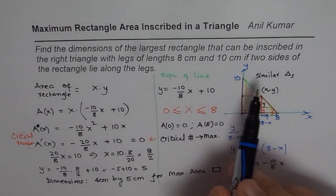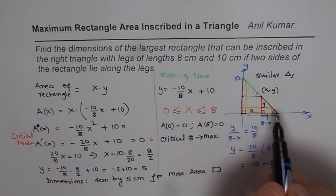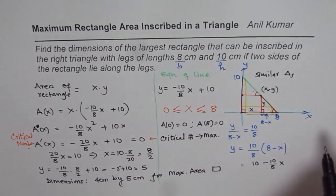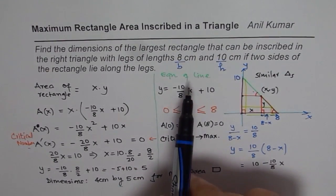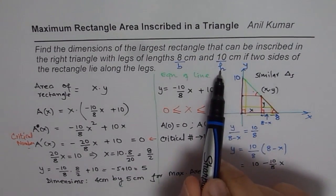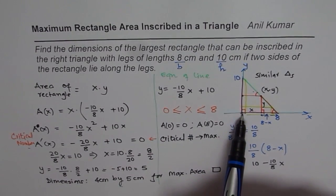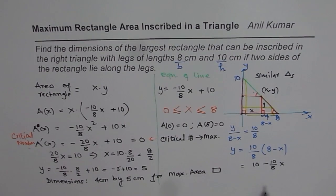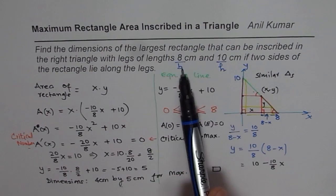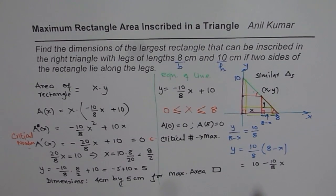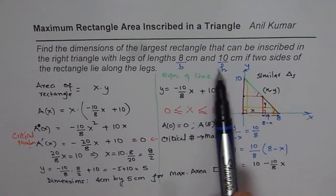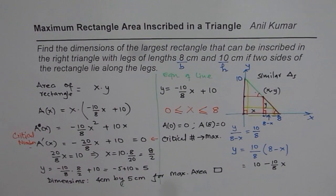You can generalize this question: if the base is b and height is h, the dimensions of the largest inscribed rectangle are b/2 by h/2. I would encourage you to explore these combinations, verify that it works for any right triangle, and then move on to similar optimization questions. Thank you and all the best.